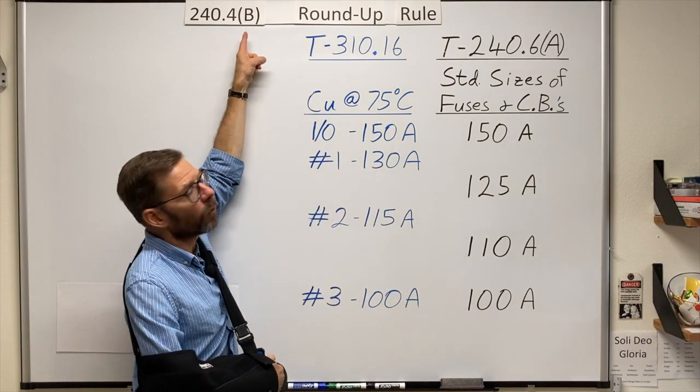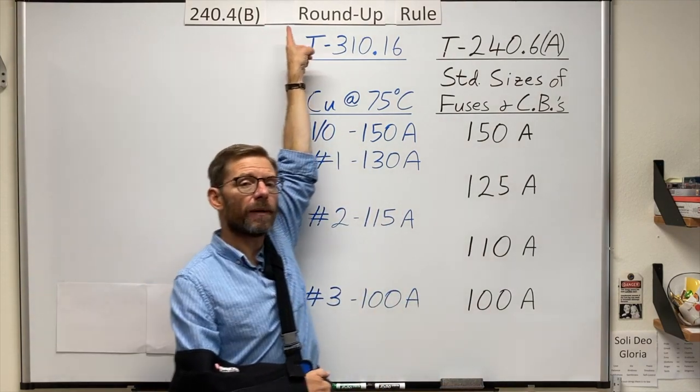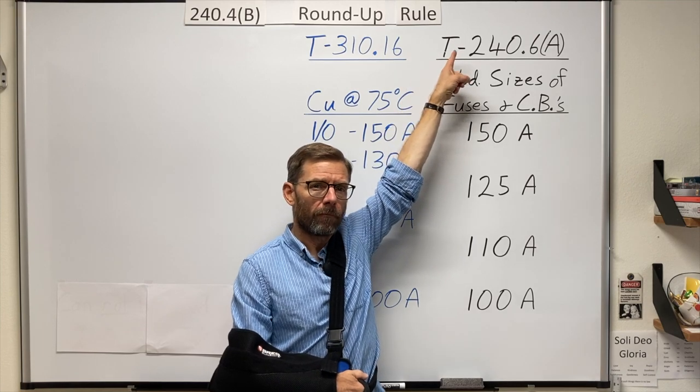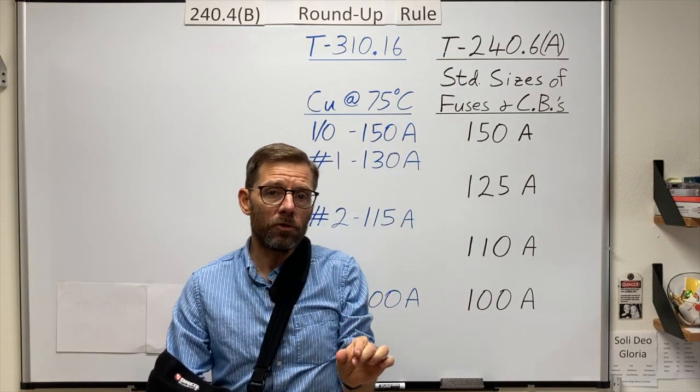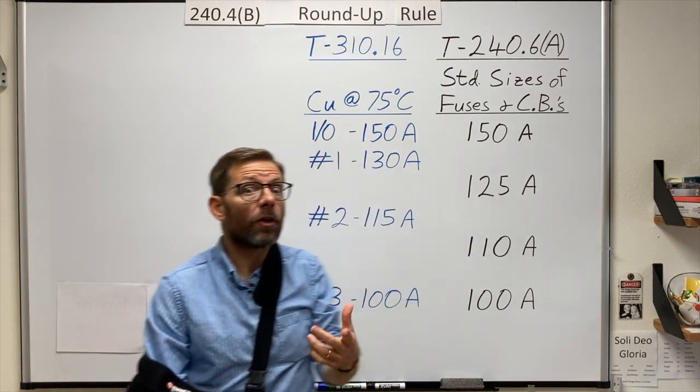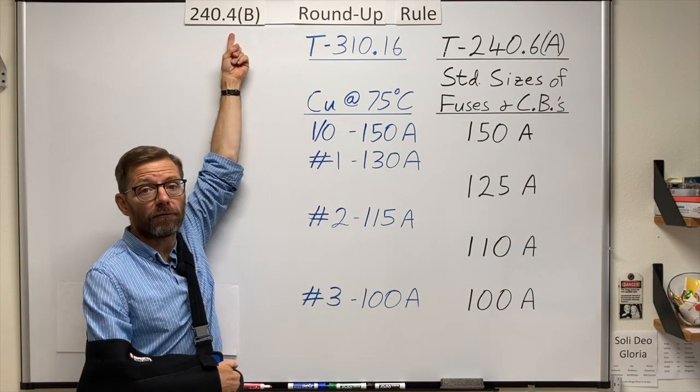we're looking at 240.4b, often goes by the nickname the Round-Up Rule, and it's one of those permissive rules to protect conductors that are allowed in the subsections of .4.